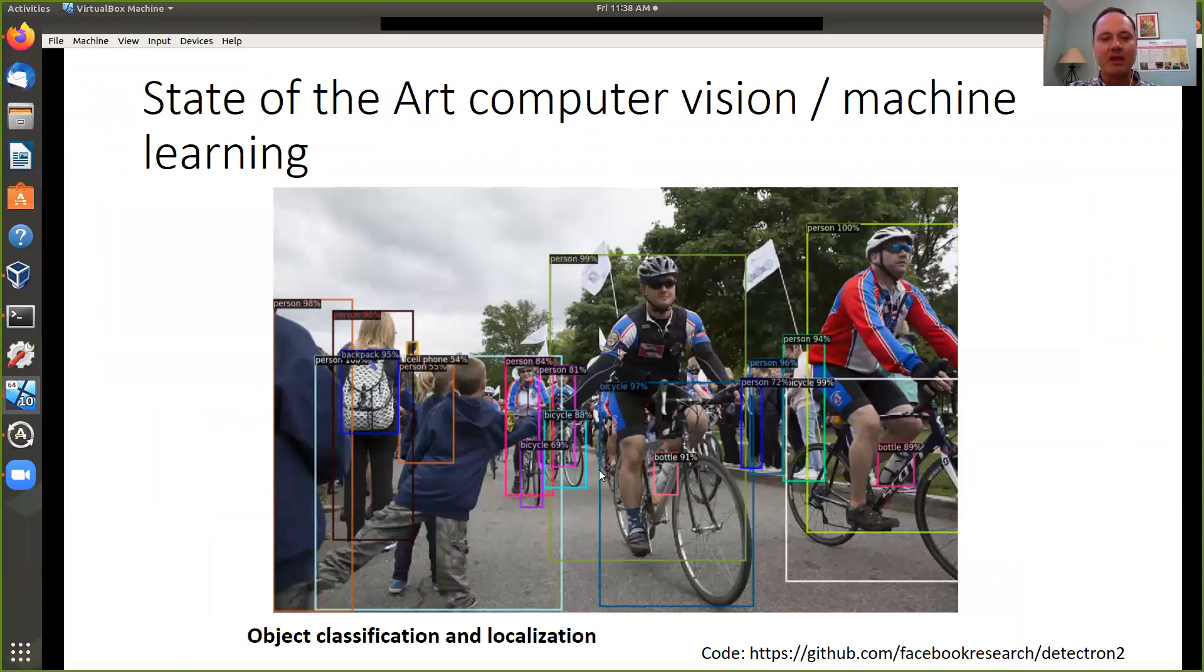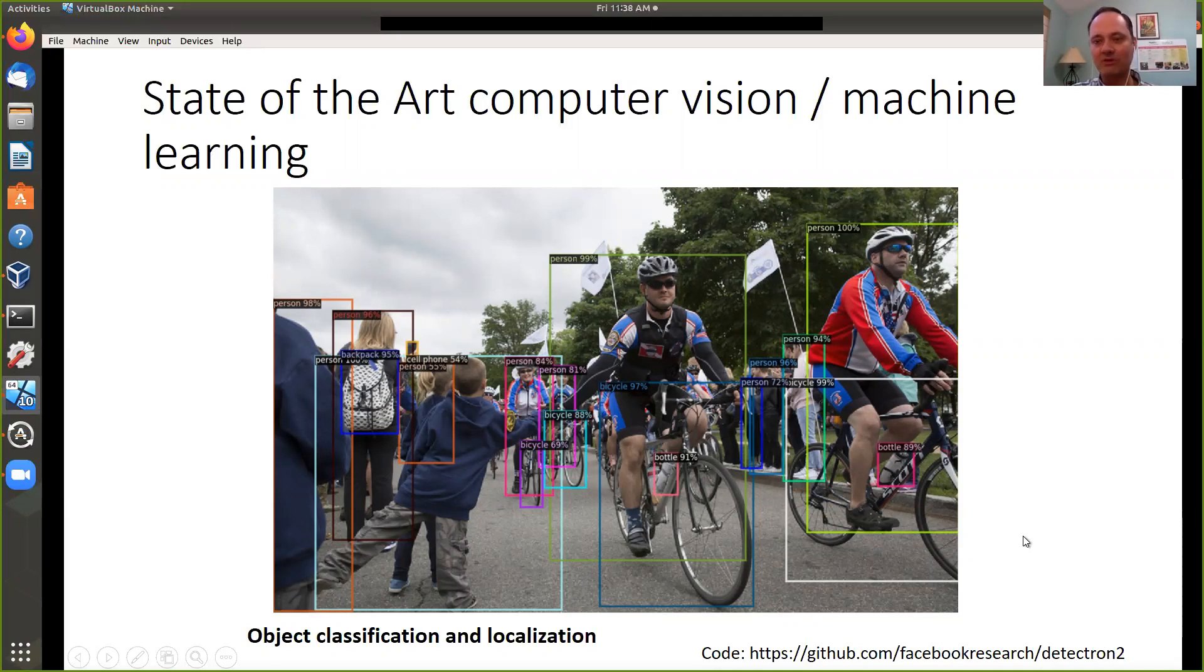Here are a few examples of what you could do with that. This is the state of the art. I have on the bottom of my slide a link. You can download the program and do what you see here. One is object classification. You can get a picture and you can find the objects like people, bicycles and so on. That's localization and classification.